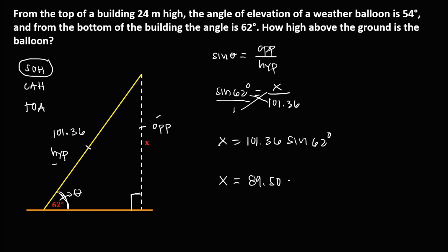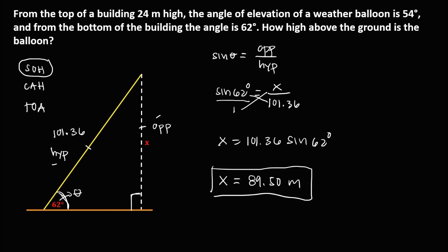So X is 89.50 meters — this is the distance from the balloon to the ground.